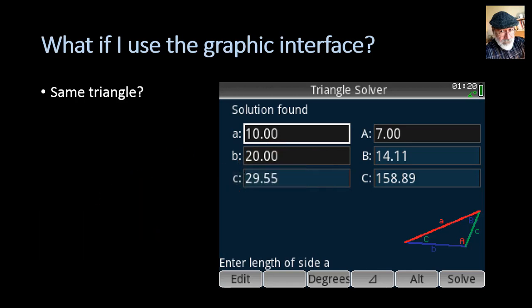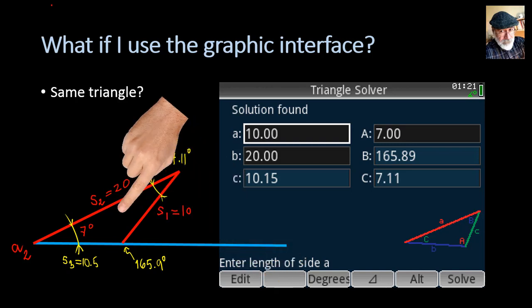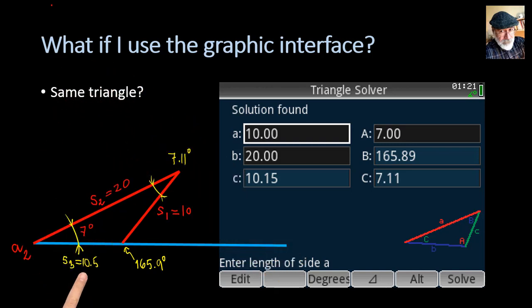But there is something interesting here. Observe here at the bottom. There is the ALT key. There is an alternate solution to this triangle. We click on that one, and we get another solution for the same sides. Side 1 is 10, side 2 is 20, side 3 is 10.15. Hey, there is a typo there. And the three angles are 7 degrees, which is not written here, 165.9 degrees, and 7.11 degrees.